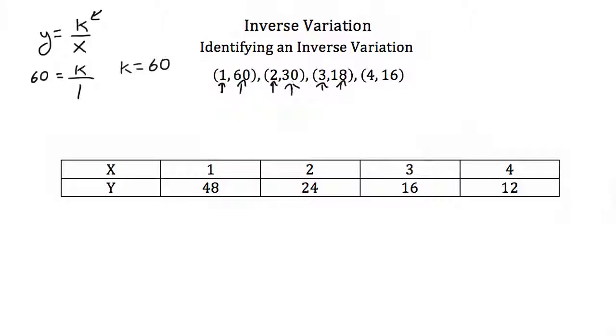Plugging in (2,30), we get k equals 60, which works. But plugging in (3,18), we get 60 divided by 3 equals 20, not 18. So this is not an inverse variation problem.